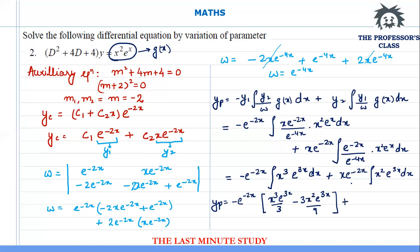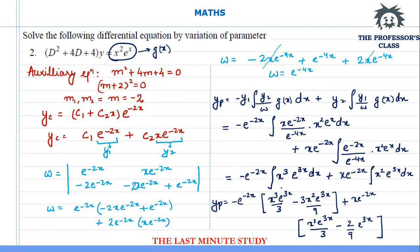Further integrating: keeping x² constant gives x²·e^(3x)/3, then differentiating gives 2x·e^(3x). Using substitution again I get 2/9·e^(3x). Let's expand and move on to simplify yp.